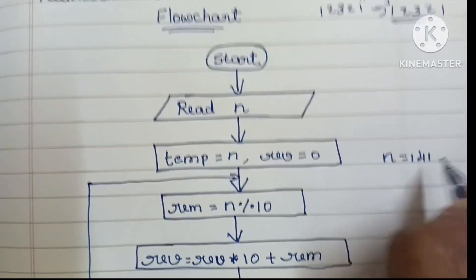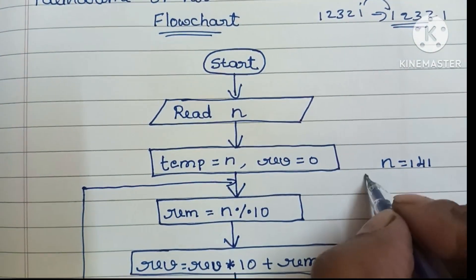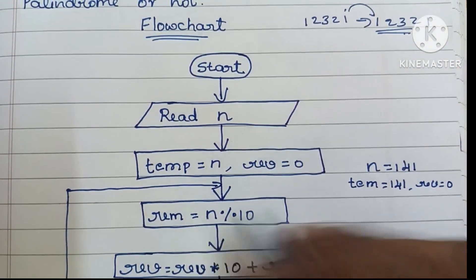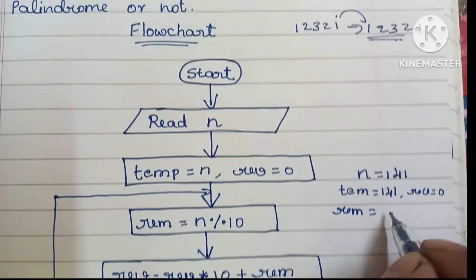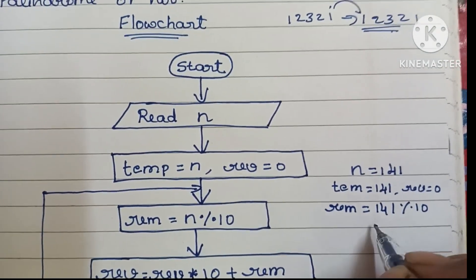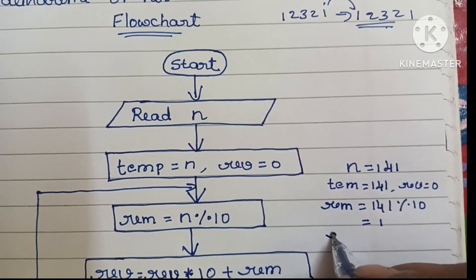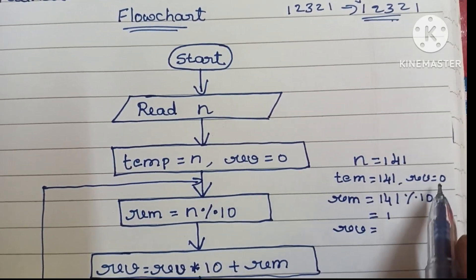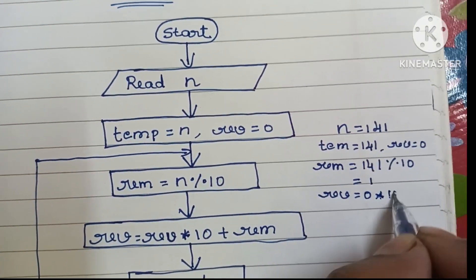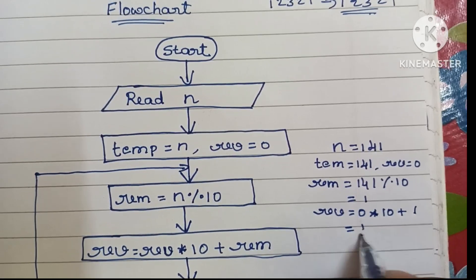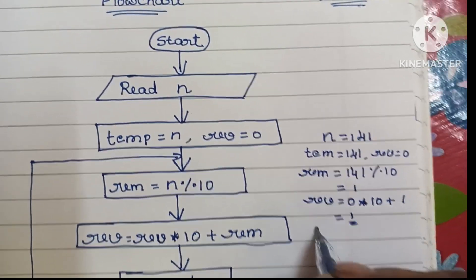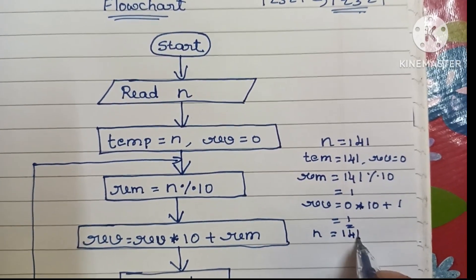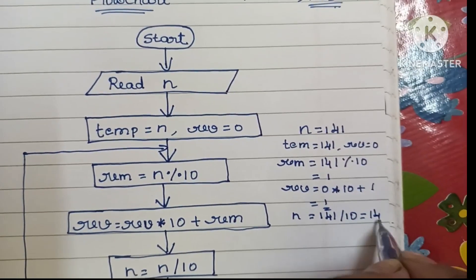For example, if n = 141: we declare temp = 141 and reverse = 0. rem = 141 modulo 10 = 1. Reverse = (0 × 10) + 1 = 1. Then n = 141 / 10 = 14. We check if n > 0 — yes, so we repeat.